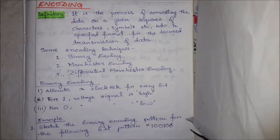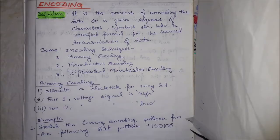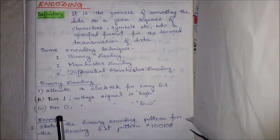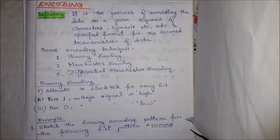Let us first see binary encoding. There are some rules you must follow while encoding your data in this form. First of all, you have to allocate a clock tick for each and every bit. A clock tick is a specific amount of time period. For bit one, the voltage signal is in a high state, and for bit zero, the voltage signal is in a low state.